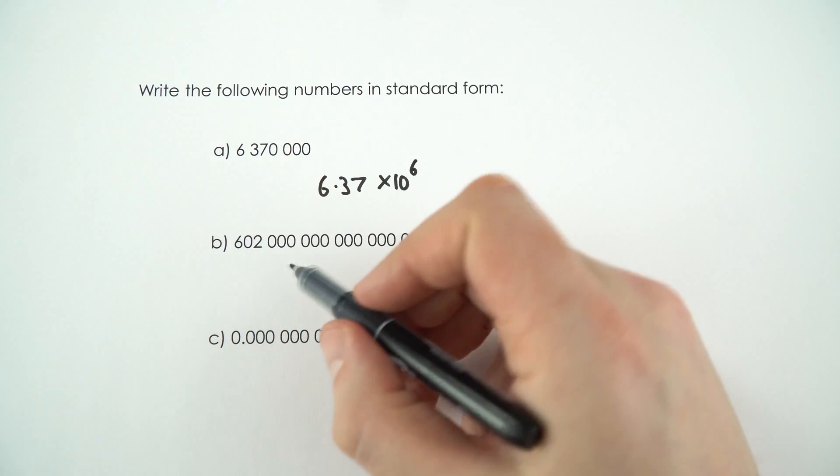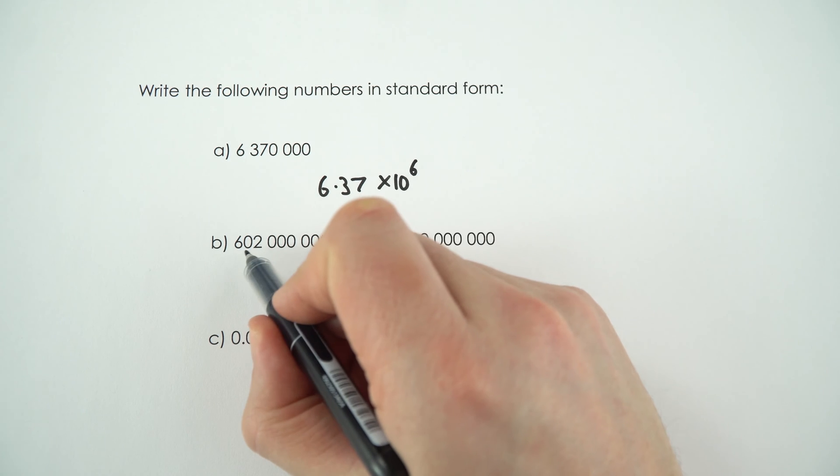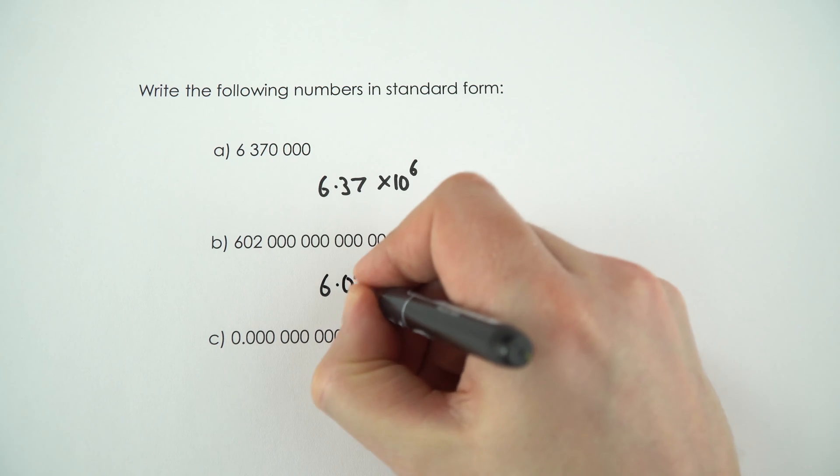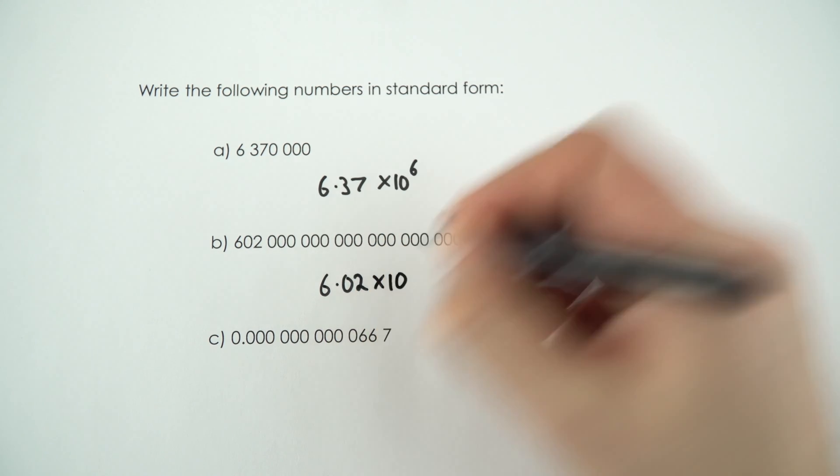The number beneath this, again we need to write in standard form. So the first number between 1 and 10 is going to be equal to 6.02. How many times do we need to move that decimal place?